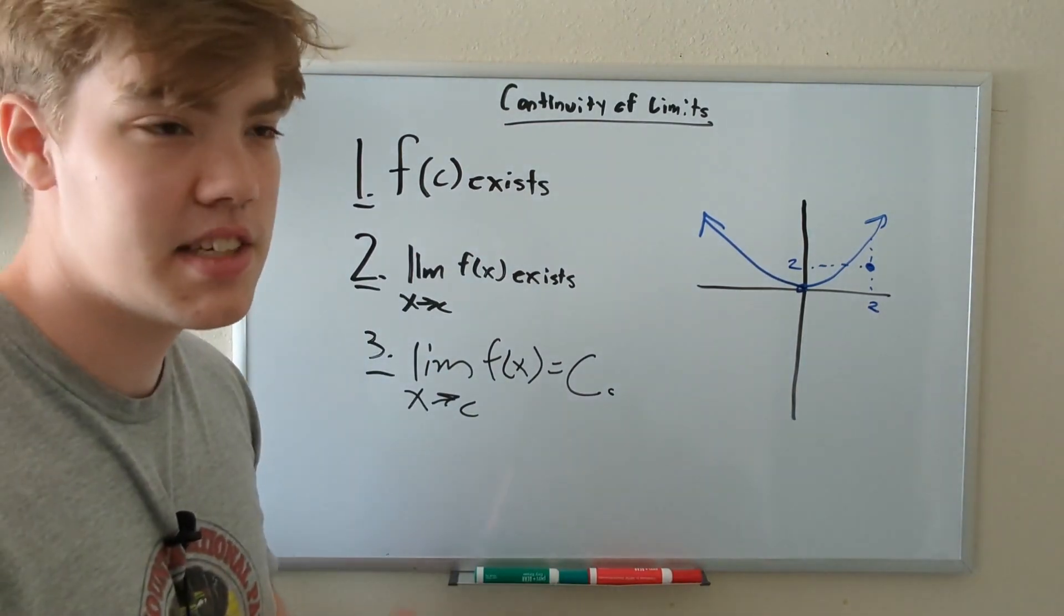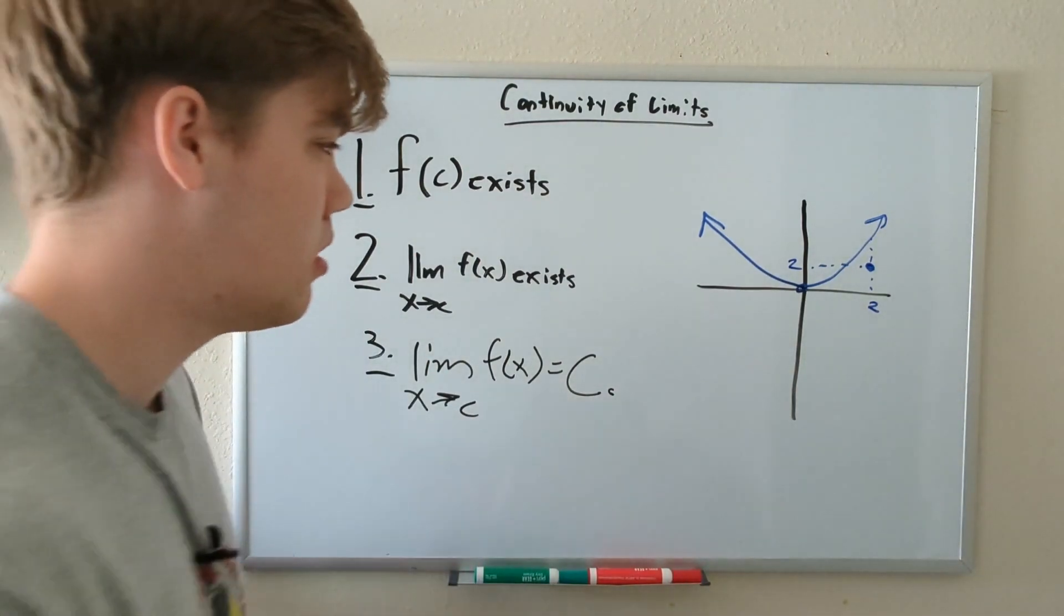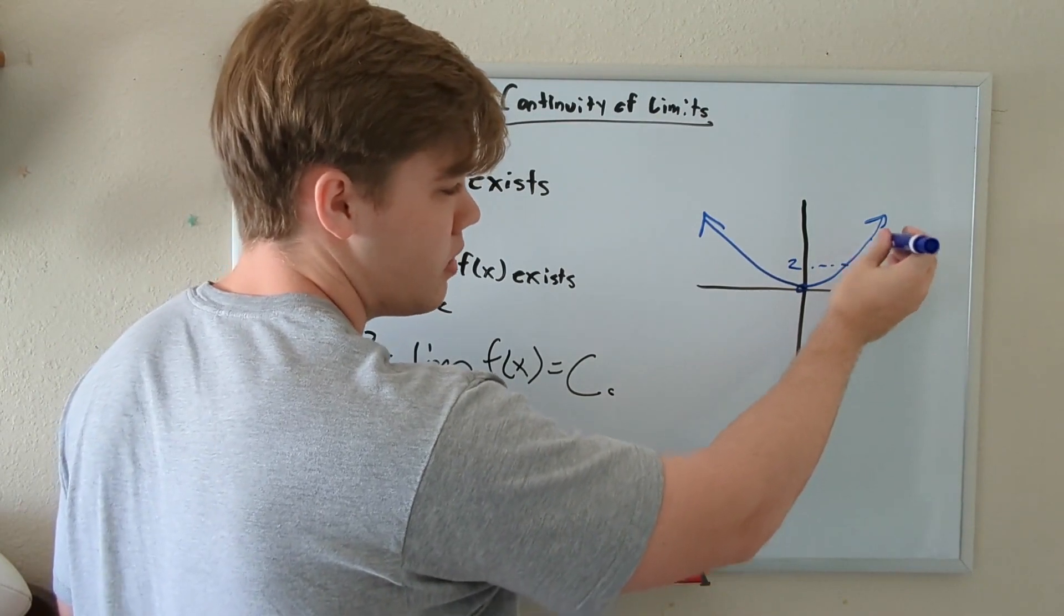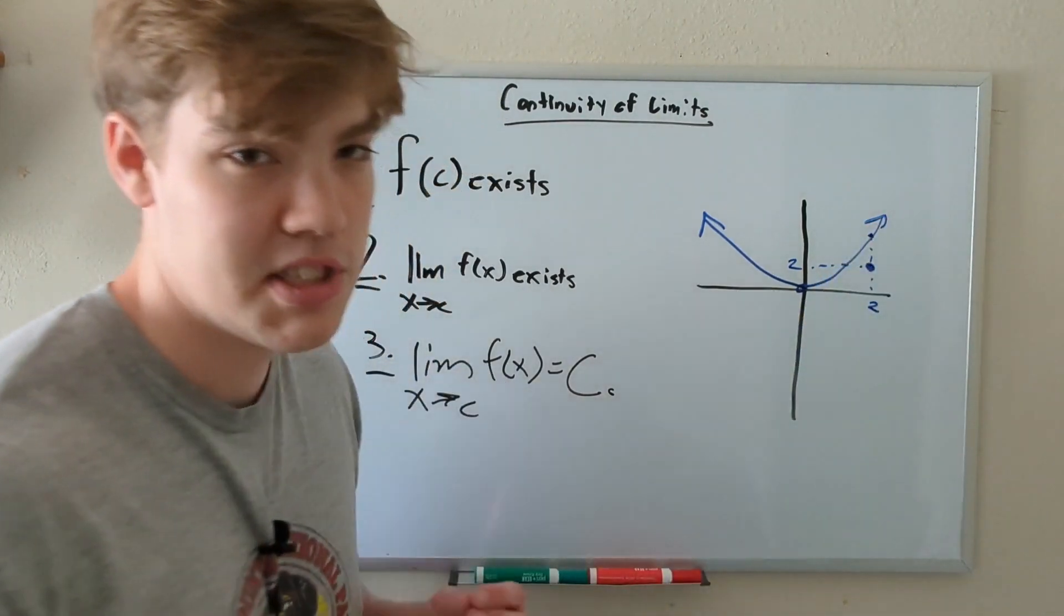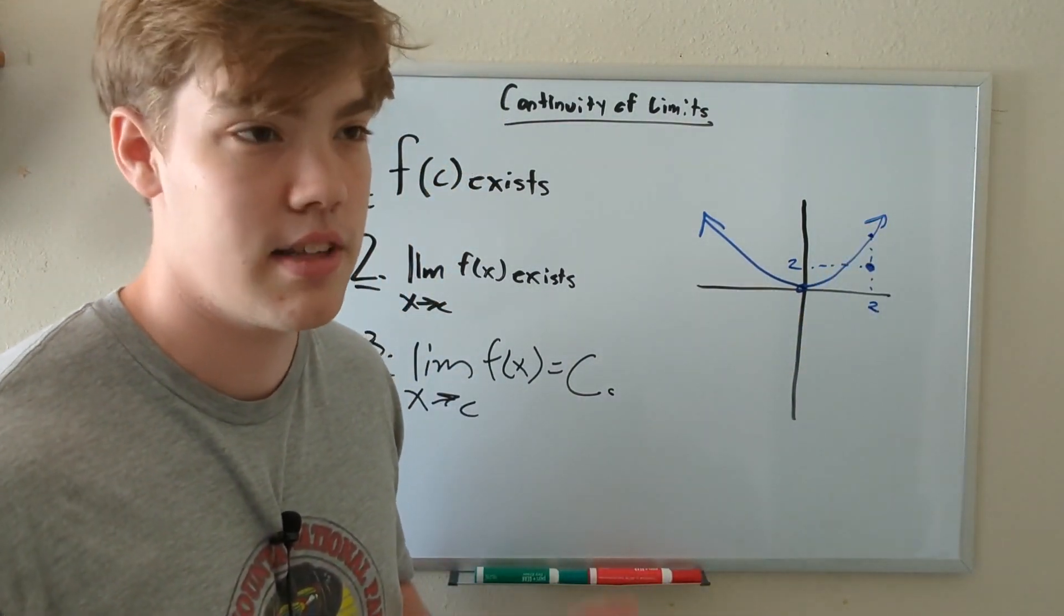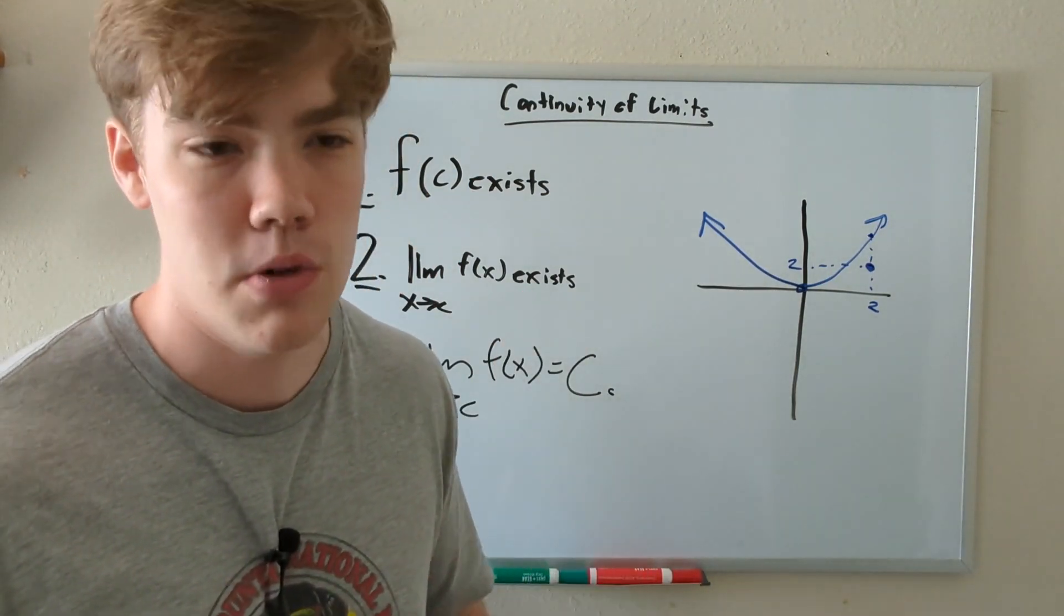Rule number one, does F of C exist at X equals two? Well, yeah. Right here is X equals two, and we have this point, and we also have this point up here. So it certainly exists. That's for certain. That's rule number one checked off. But we've got to get through the other two rules.